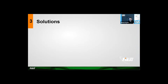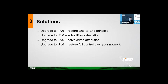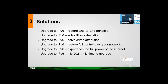At this point, I hope you understand that CGN can be problematic. But the solution is actually very simple: upgrade to IPv6 — restore the end-to-end principle, solve IPv4 exhaustion, solve crime attribution, restore full control over your network, and experience the full power of the internet. It's 2021, it's time to upgrade. And yes, I wrote 'Upgrade to IPv6' six times on purpose.